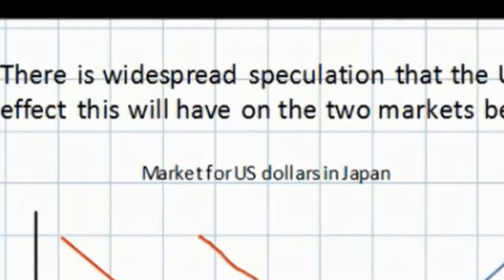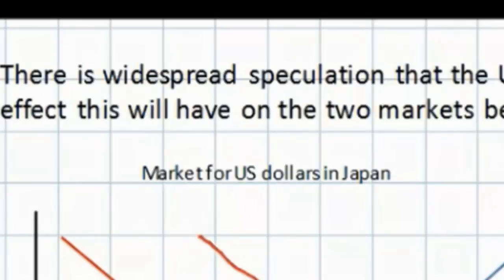The increase in demand for US dollars should cause the US dollar to appreciate. Let's assume the new equilibrium exchange rate for the US dollar is 100 yen per dollar. At the higher exchange rate, the increase in the supply of Japanese yen in the United States will cause the exchange rate of the yen against the dollar to decrease to $0.01, which is the inverse of 100. The decrease in the value of the yen will mean that American households will demand a greater quantity of yen to buy more Japanese goods and services. Speculation that the US dollar will increase in value leads to an increase in demand for dollars in Japan, causing the dollar to appreciate, while the supply of yen in the United States increases, causing the yen to depreciate.